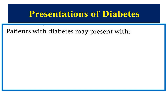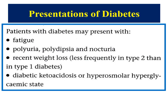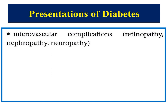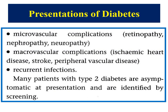Regarding the presentations of diabetes, patients may present with fatigue, polyuria, polydipsia, and nocturia — weight loss is less frequent in type 2 than type 1 diabetes. Presentations also include diabetic ketoacidosis or hyperosmolar hyperglycemic state, macrovascular complications such as retinopathy, nephropathy, neuropathy, or macrovascular complications including ischemic heart disease, stroke, and peripheral vascular disease, and recurrent infections. Many patients with type 2 diabetes are asymptomatic at presentation and are identified by screening.